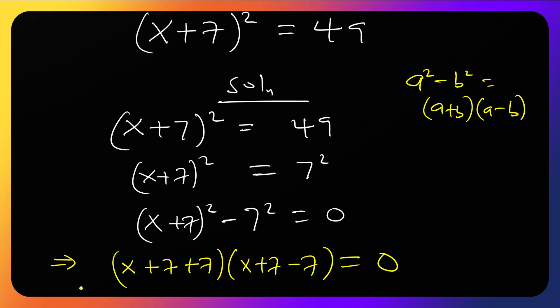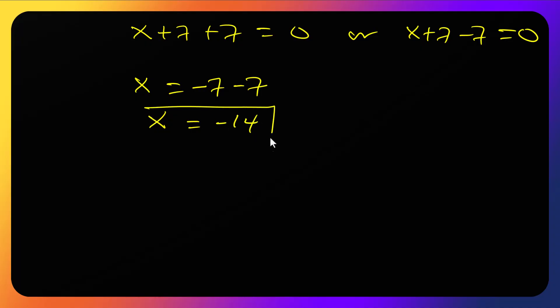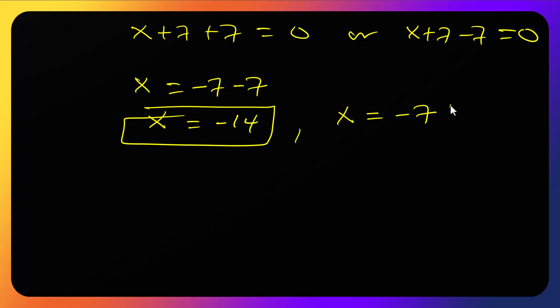From here we have x + 7 + 7 = 0, or x + 7 - 7 = 0. So we get x = -7 - 7 = -14, and x = -7 + 7 = 0. So x equals zero. The two answers are x = -14 and x = 0.